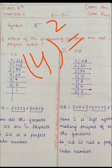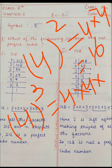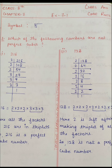4 की power 2 लगा देंगे और 4 को 2 times multiply करते हैं तो 4×4=16 आता है। अब बात करते हैं cube की — 4 का cube क्या होगा? हम power 3 लेते हैं। 4 को 3 times multiply करते हैं: 4×4=16, 16×4=64। तो 4 का cube 64 है। किसी भी number का cube निकालने के लिए हम उस number को 3 times multiply करते हैं।